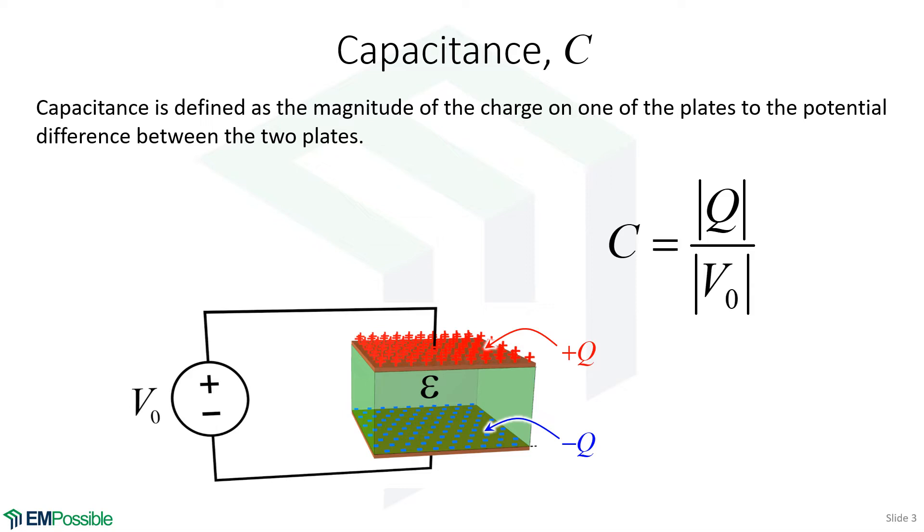When we apply a voltage, there will be an accumulation of positive charge on the top plate and an accumulation of negative charge on the bottom plate.